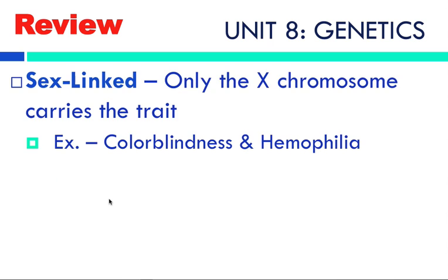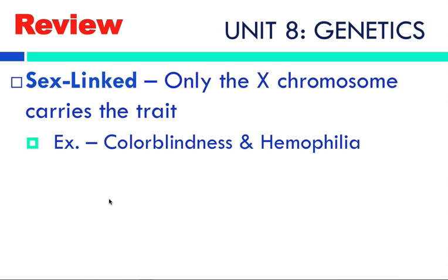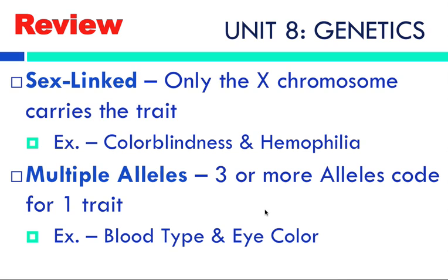So a quick review, I know I'm running out of time. Sex-linked traits, only the X chromosome can carry the trait. And the two examples we talked about were colorblindness and hemophilia. Remember, you're going to have an X and a Y, but only the X can carry the trait. So I used the little superscripts. Multiple alleles, same thing. Three or more alleles will code for one trait. You're usually going to still have the dominant, the recessive, the big, and the little. And then you use a superscript to do those ones. And blood type and eye color are the examples.